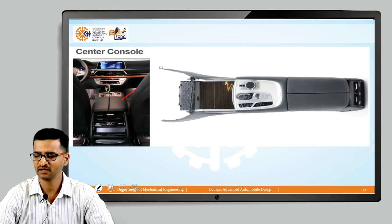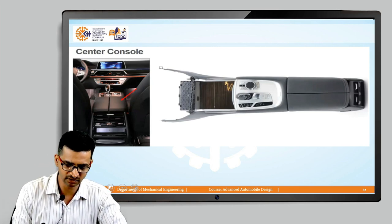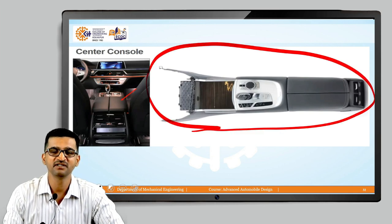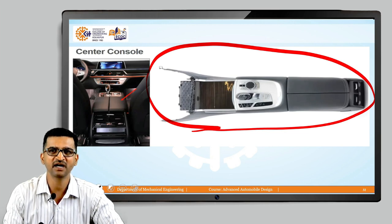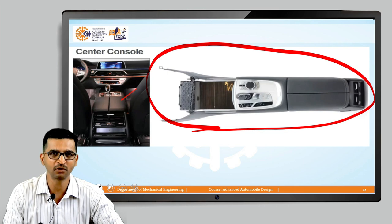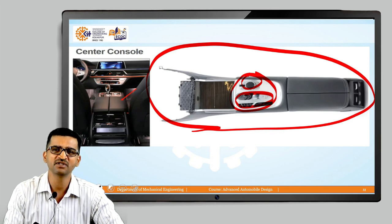The next interior trim element is the central console. This is the top view of the central console, located between the two front seats — the passenger seat and driver seat. Different cars may have different structures. Some may have only a door opening and bottle holders, some may also have AC controls, door lock controls, or an automatic transmission gear shift. This is a small luggage compartment and bottle holder area.